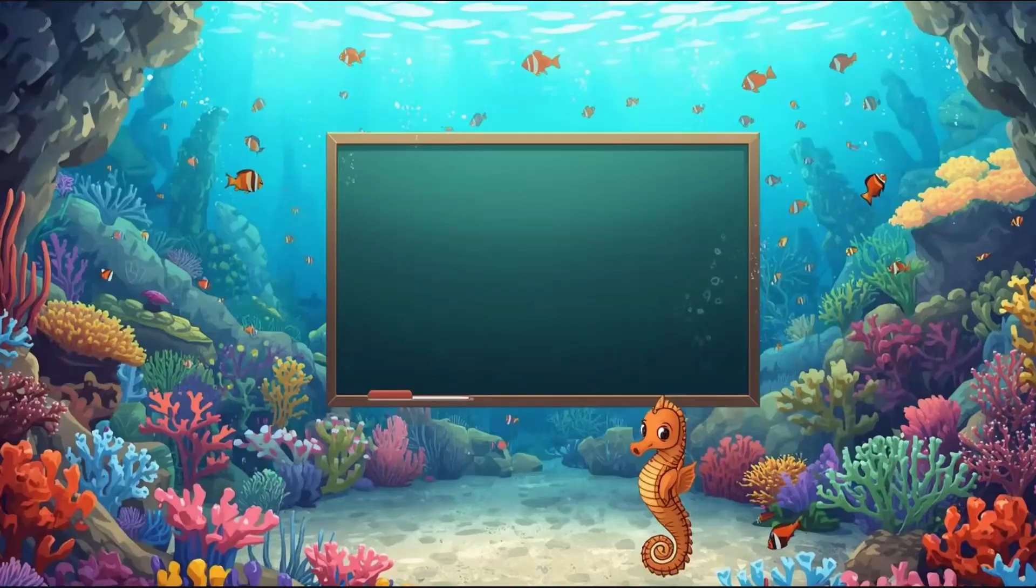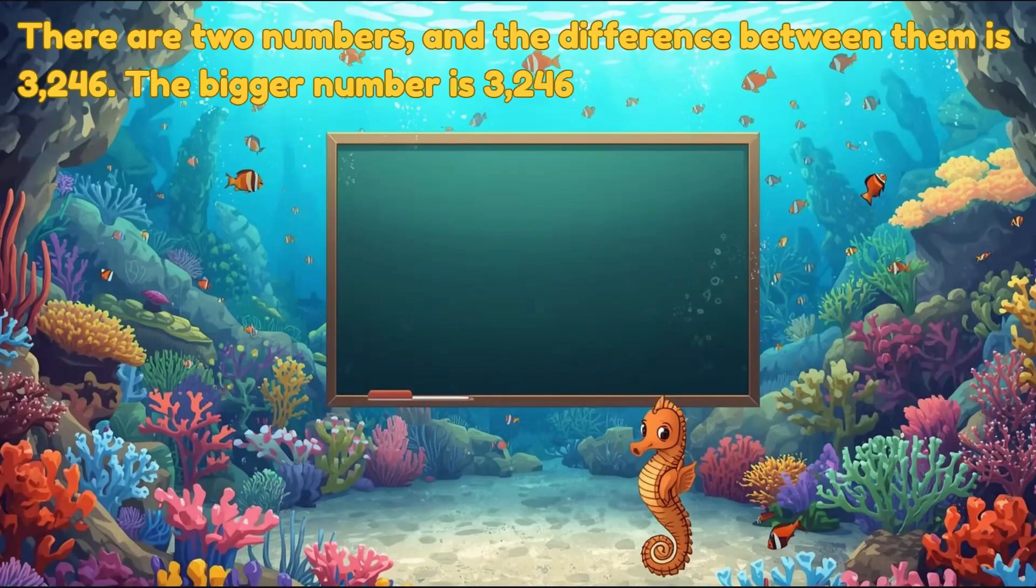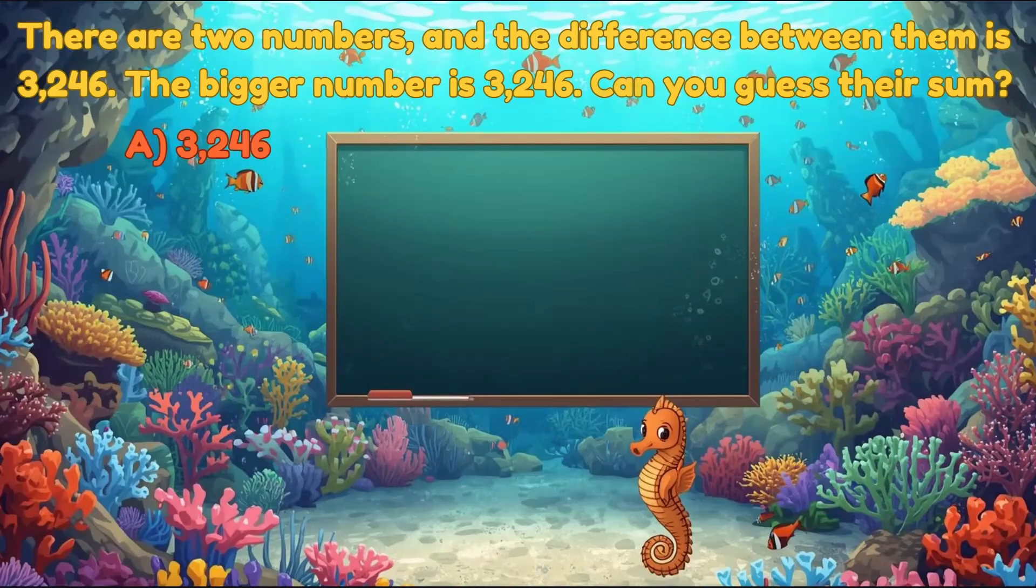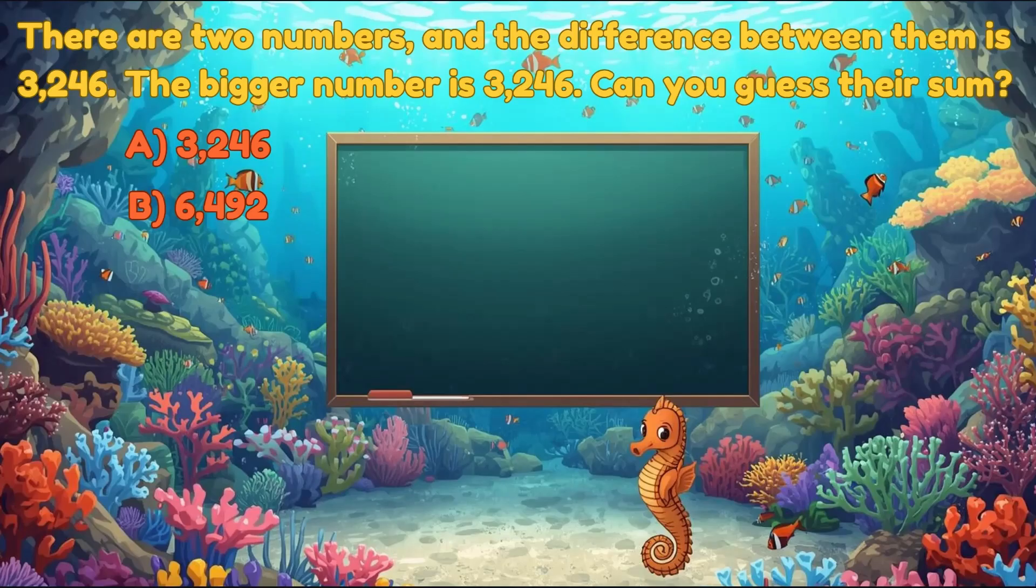Here's a fun number puzzle. There are two numbers, and the difference between them is 3,246. The bigger number is 3,246. Can you guess their sum? Options: A. 3,246, B. 6,492, C. 6,000, D. 5,000.